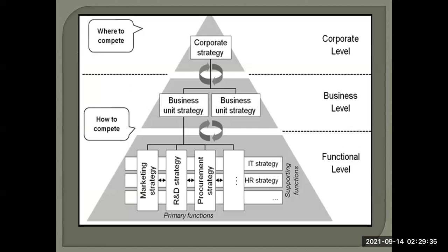At the functional level, below the SBU level, there are many functions within each subsidiary — such as marketing and sales, advertisement, new product development, research and development, production, procurement, finance, HR, and information technology. Strategies have to be decided for all these different managerial functions. This is the third level of strategy.